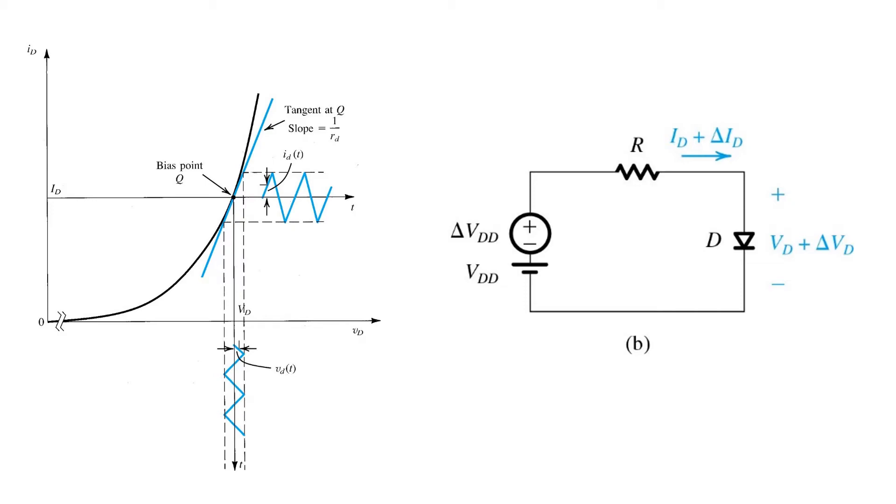The key to this small signal analysis is to model all the nonlinear components by linearizing them around an operating point. We'll call this the bias point, and we'll often use the symbol Q to denote it. So for a diode, we know that it has an exponential voltage-current relationship, as pictured on the right.